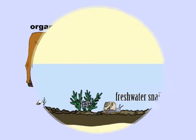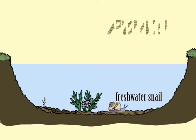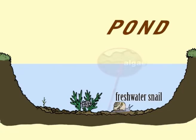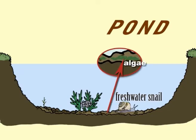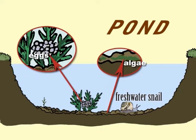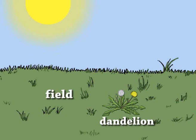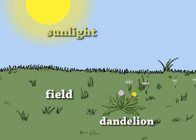For example, a freshwater snail lives in a pond where there is plenty of algae to feed on and where it can lay its eggs in the water. A dandelion lives in a field where there is plenty of sunlight for it to grow and where the wind can easily disperse its seeds to the surrounding area.